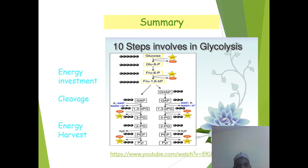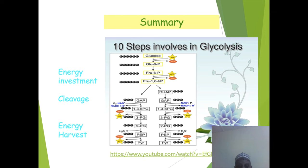Here is a summary of all 10 steps: glucose → glucose-6-phosphate → fructose-6-phosphate → fructose-1,6-bisphosphate → dihydroxyacetone phosphate + glyceraldehyde-3-phosphate → 1,3-bisphosphoglycerate → 3-phosphoglycerate → 2-phosphoglycerate → phosphoenolpyruvate → pyruvate. Two parallel tracks run simultaneously through the payoff phase.